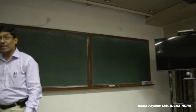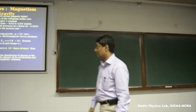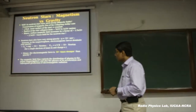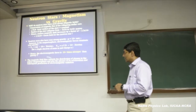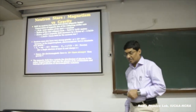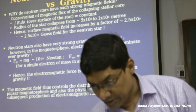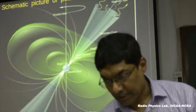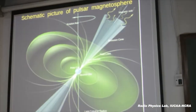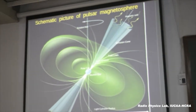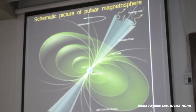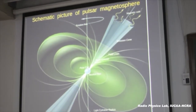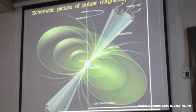Gravitational field has its own effect on other objects which come near to the neutron star — that is where you learn about binary pulsars, what you learn from them, and Einstein's theory of relativity. The magnetic field is the boss here — it controls what happens, how the plasma is generated, how the plasma is accelerated, how you get charged particles which accelerate and emit radiation.